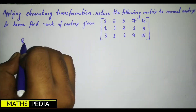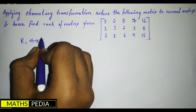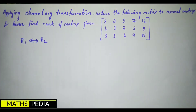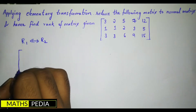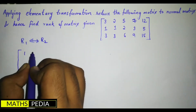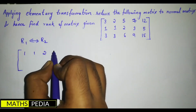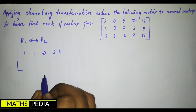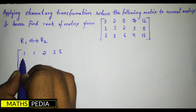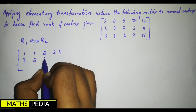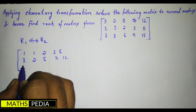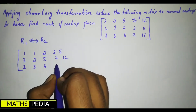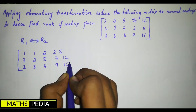We apply R1 interchange R2. When we interchange both rows, the answer will be: first row becomes 1, 1, 2, 3, 5 and the second row becomes 3, 2, 5, 7, 12. The third row will remain the same.